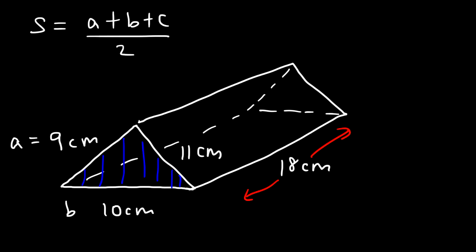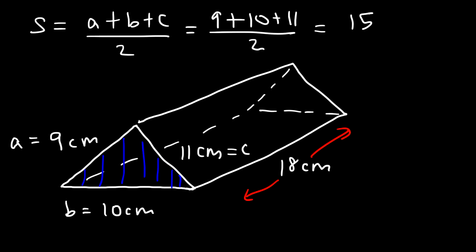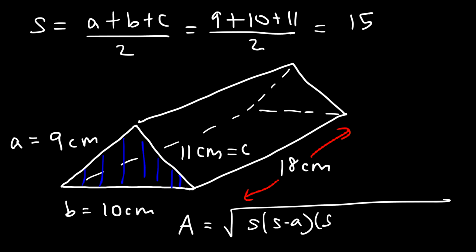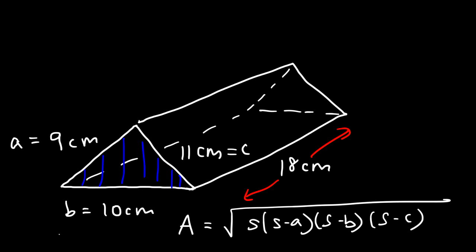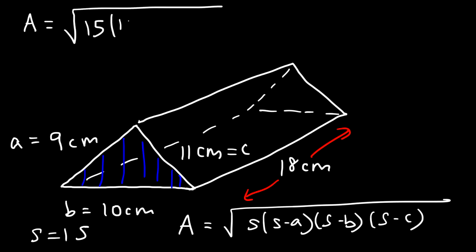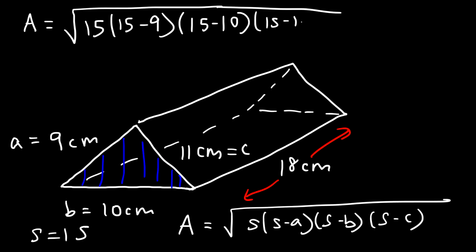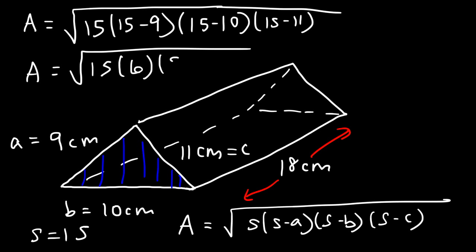We can call the sides a, b, and c. So it's going to be 9 plus 10 plus 11 divided by 2. 9 plus 10 is 19, and 19 plus 11 is 30. 30 divided by 2 is 15. Once you have s, you can calculate the area using this formula: the square root of s times (s minus a) times (s minus b) times (s minus c). With s equal to 15: 15 minus 9 is 6, 15 minus 10 is 5, and 15 minus 11 is 4.